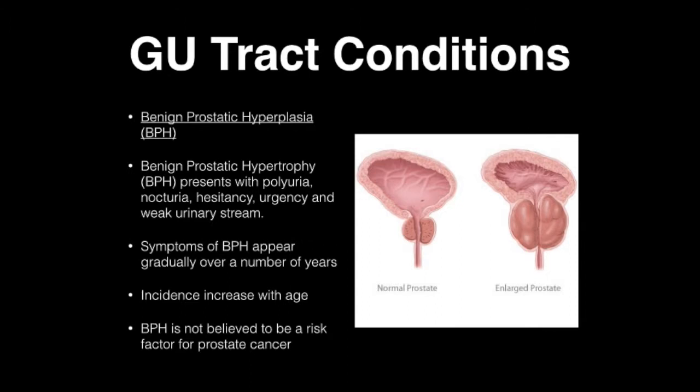The first condition is benign prostatic hypertrophy. BPH presents with polyuria, nocturia, hesitancy, urgency, and a weak urinary stream. A key characteristic is that these symptoms appear gradually over a number of years. There is an increased incidence with age, especially over the age of 50.